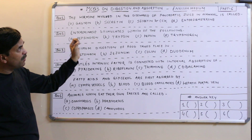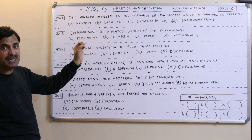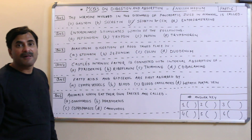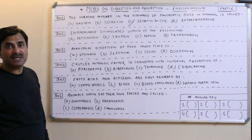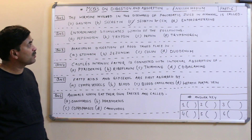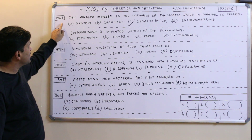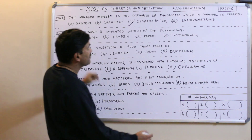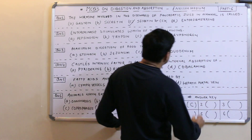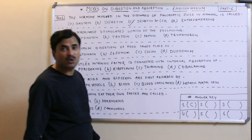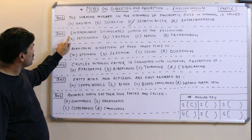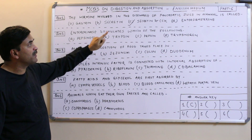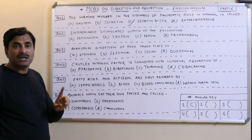Always remember, the hormones involved in the discharge of pancreatic juice in mammals are two: secretin and CCK, that is cholecystokinin. So the answer to question number one is secretin as well as cholecystokinin.